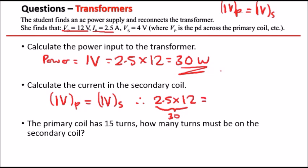And this is equal to the IV of the secondary coil. So I for secondary, which we don't know, that's what we're trying to calculate, and times the V voltage of the secondary coil is 4.